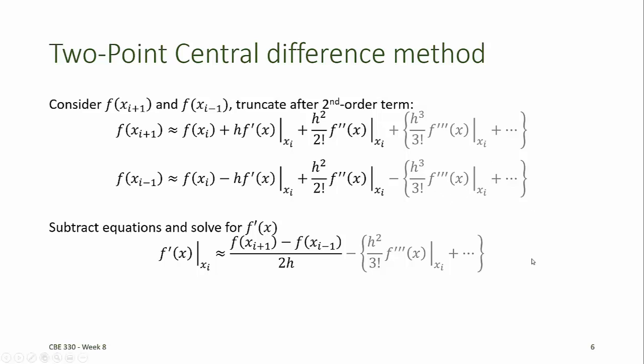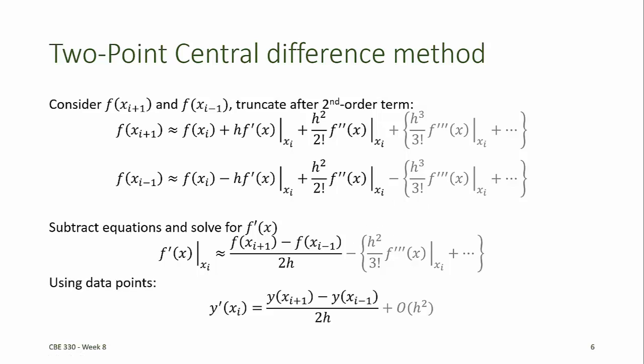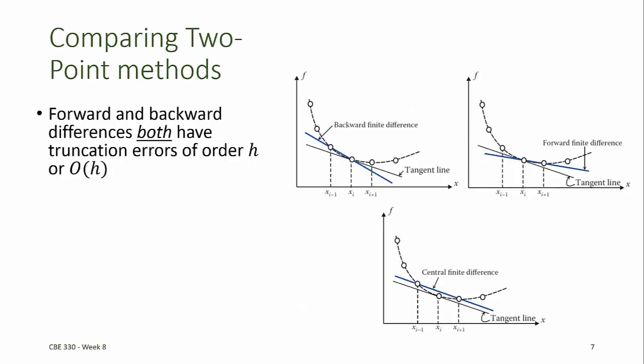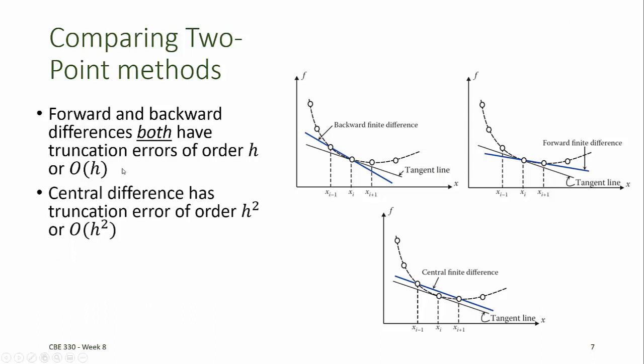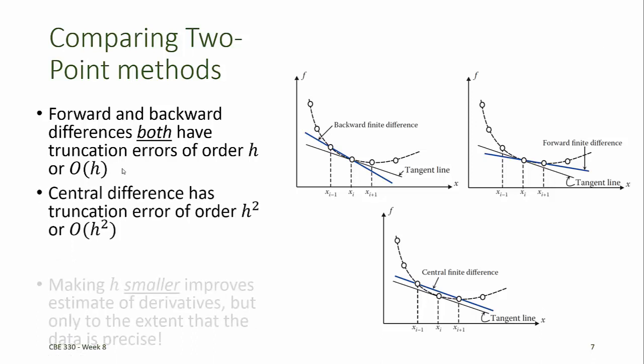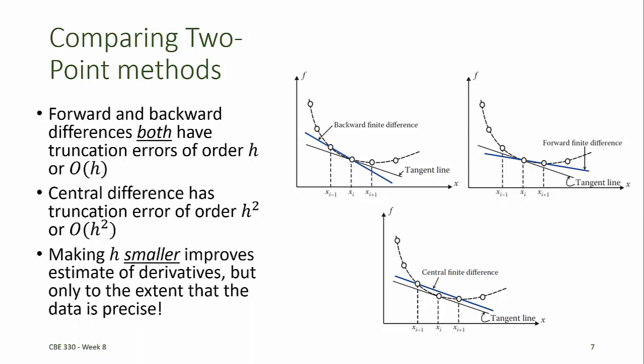Also, dividing by 2h makes the truncation term proportional to h squared. Substituting in the y-values for the function gives us the two-point central difference method for approximating the first derivative. This has truncation error of order h squared. When h is small, the truncation error of the two-point central difference method is smaller than the truncation error of the two-point forward and backward difference methods, which are of order h. Making h smaller therefore improves the estimate of the derivatives, but only to the extent that the data is precise.